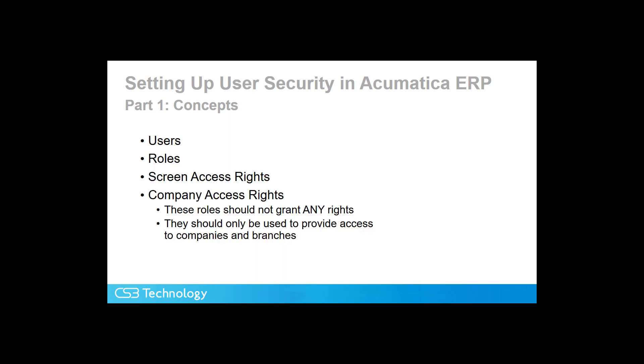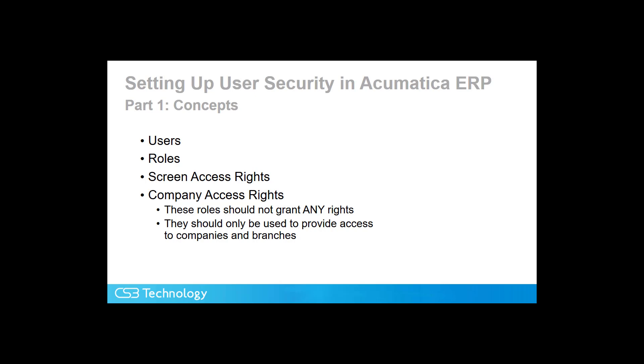In addition to screen access rights, there are also company access rights. These are roles that should not grant any screen access, but are only used to provide access to companies and branches. Here we see an illustration showing the user and the roles that provide company access. Joe User has access to the two branches that make up company one and company two. There is also a role for the ZZ Partners company that Joe User does not have access to.